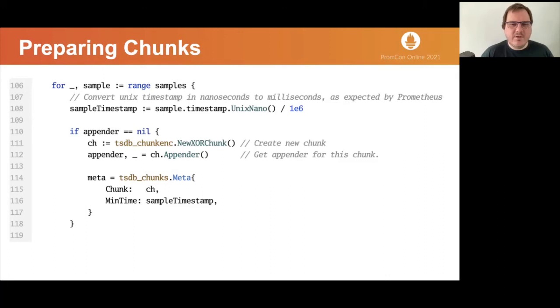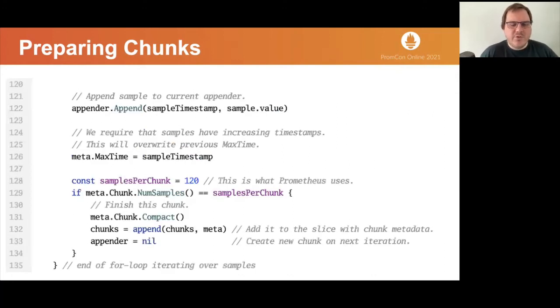This code example shows how to prepare chunks for a single time series from given list of samples. Each sample has a timestamp and the float64 value. We need to iterate through all samples. We convert the timestamp to the Unix timestamp in milliseconds, because that is what Prometheus expects to find in TSDB block. We check if we have appender for chunk. If not, we create a new XOR chunk, which is used by Prometheus, and we get appender for this chunk. Appender is used to write individual samples to the chunk. We are not only building chunks, but also chunk meta information with minimum and maximum time. Now that we have appender, we can write samples to chunk. We simply append sample to the appender and update max time in metadata. In this step, we assume that timestamps for samples are increasing.